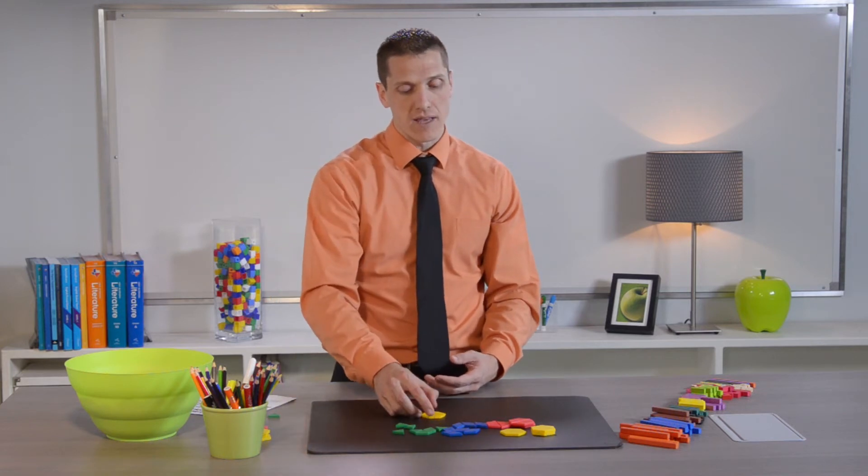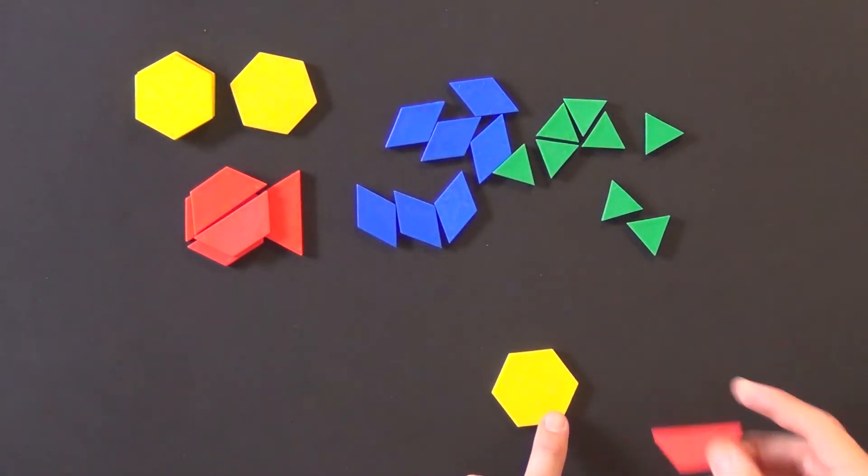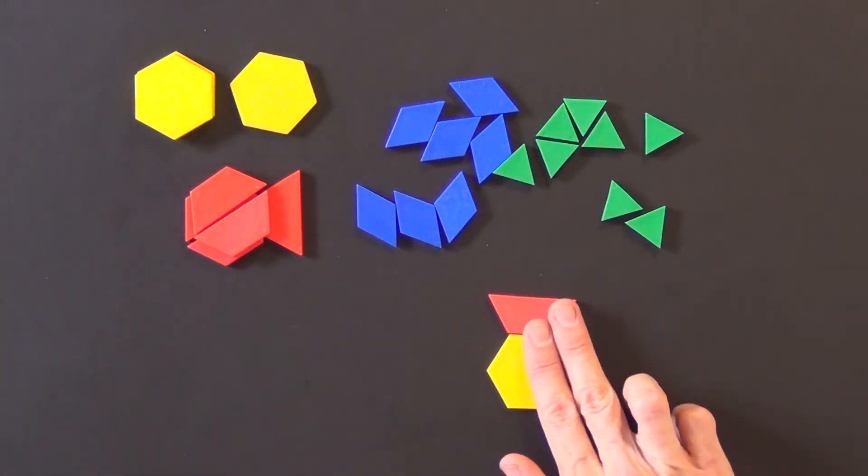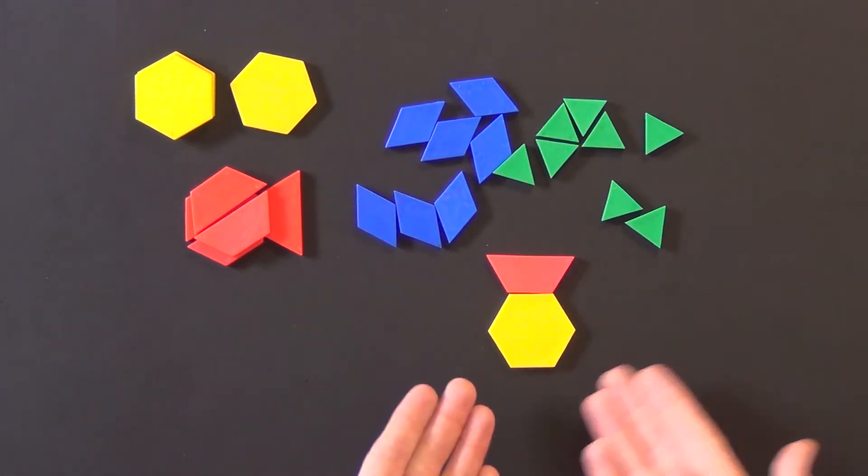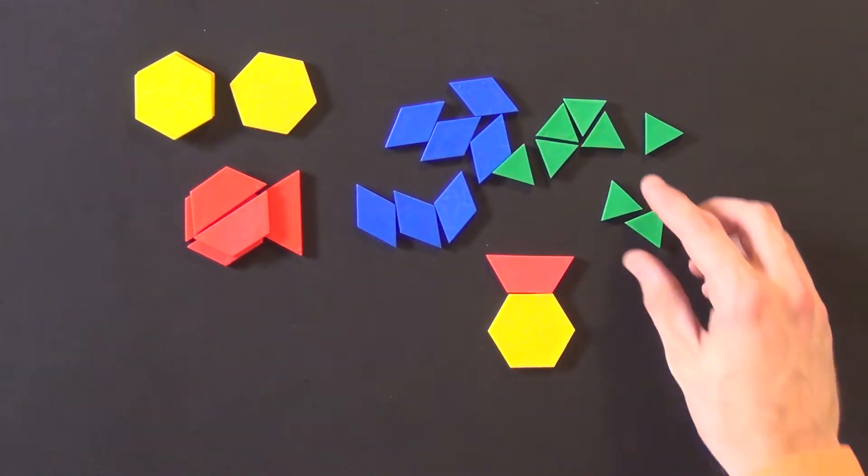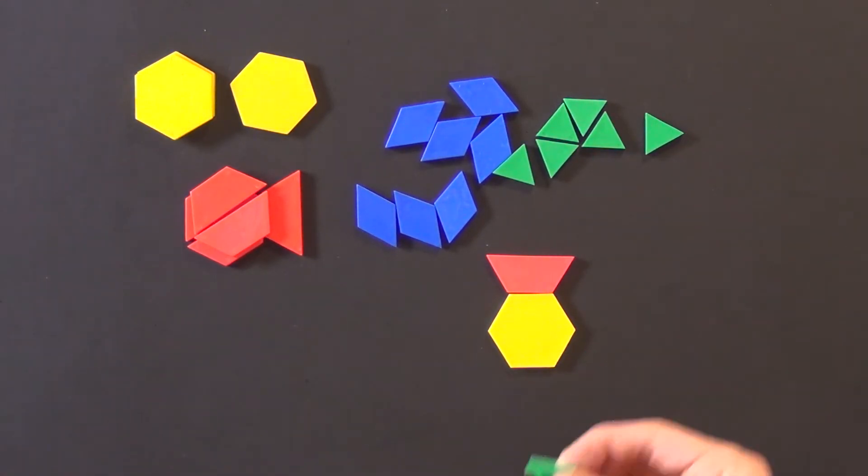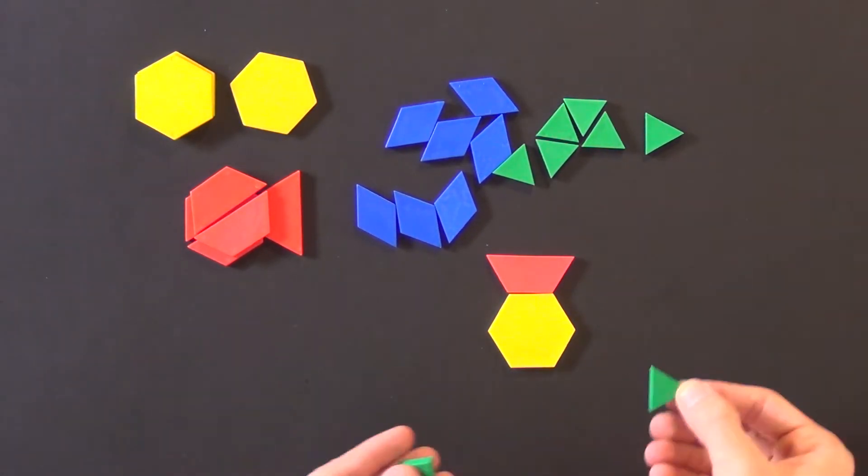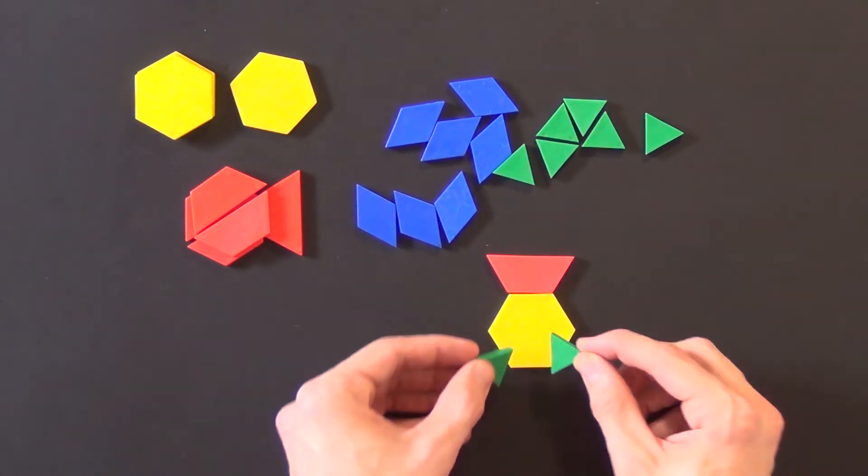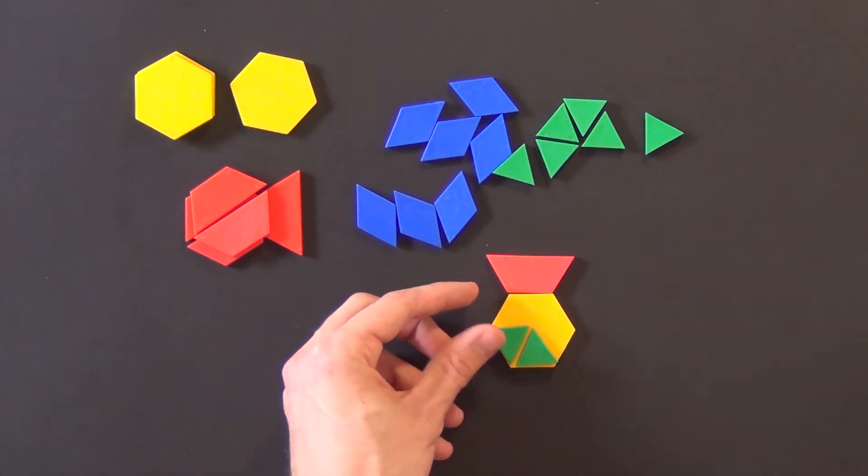For example, students might think, well let me take the yellow hexagon and the red trapezoid and I'll make this piece here and it will represent my whole. I would next say, okay, well how are you going to show eighths? The students will line up their green triangles here.